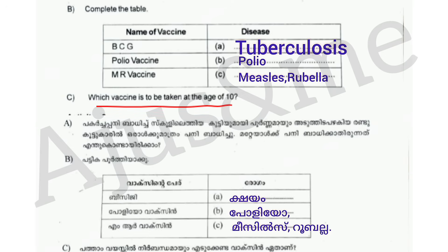Question C: Which vaccine is to be taken at the age of 10? The vaccine to be taken at the age of 10 is Tetanus Diphtheria.